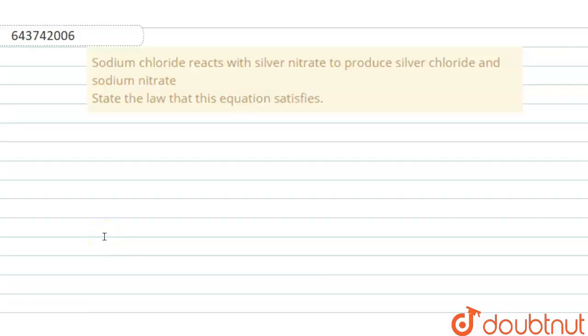Hello everyone, we have this question where sodium chloride reacts with silver nitrate to produce silver chloride and sodium nitrate. We have to state the law that this equation satisfies.